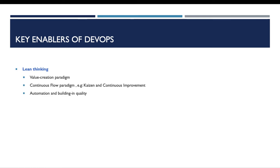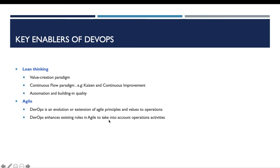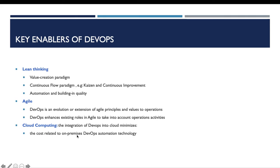The next field to which DevOps is closely related is Agile. DevOps is an evolution or extension of Agile principles and values to operations. DevOps also enhances existing roles in Agile to take into account operation activities. The third field to which DevOps is closely related is the cloud computing field. The integration of DevOps into the cloud minimizes costs related to on-premises DevOps automation technology and delivers centralized governance for an effective DevOps process.